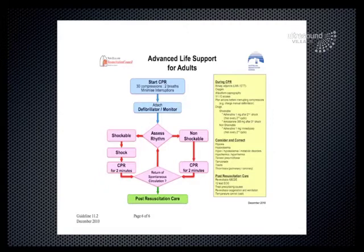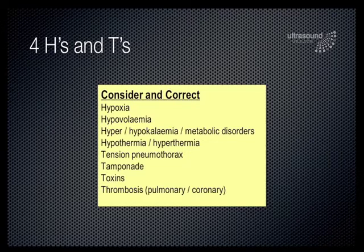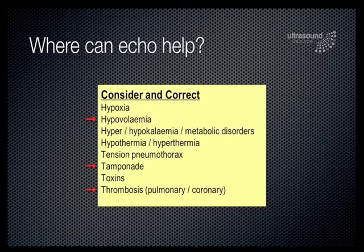This is the 2010 guidelines from the Australian and New Zealand resuscitation councils, taking into account the changes brought in by ILCOR 2010. It's a much simpler algorithm than has been previously shown, with a clear division into non-shockable and shockable rhythms. You'll see a small box: 'consider and correct the four H's and T's' — these are the potentially reversible causes of cardiac arrest that need to be targeted. Echo can help identify some of these.